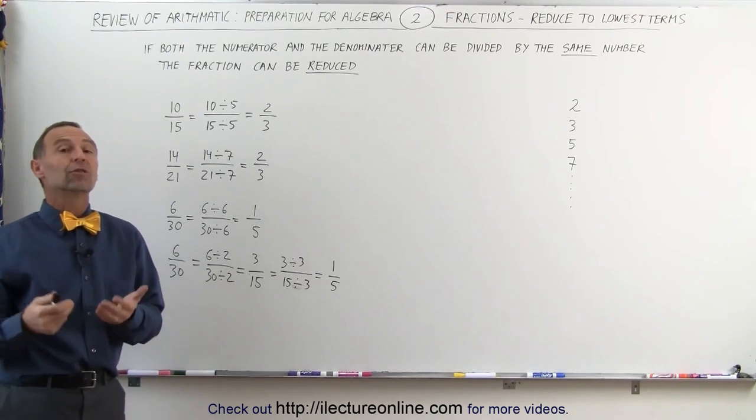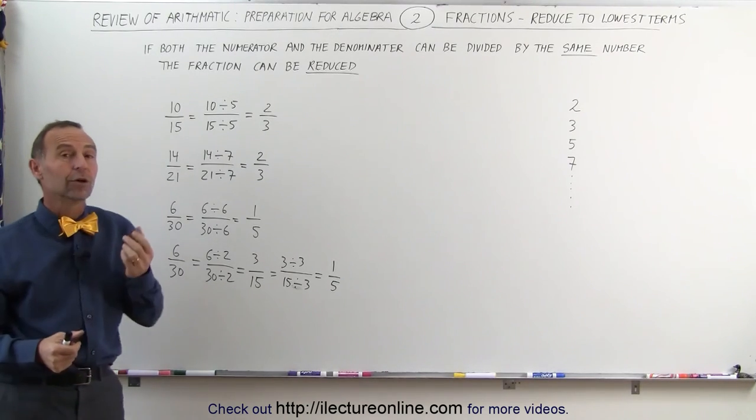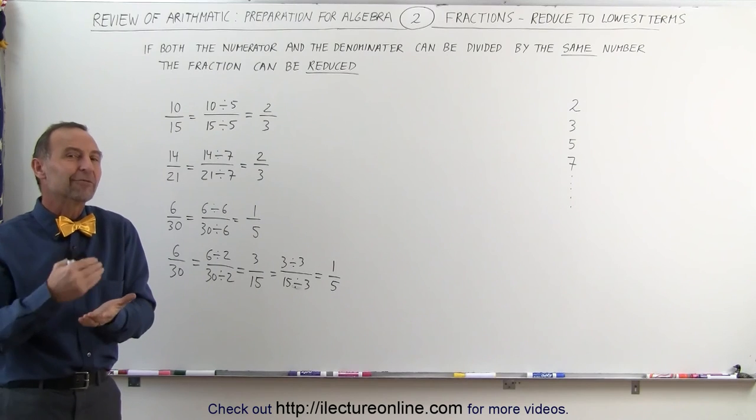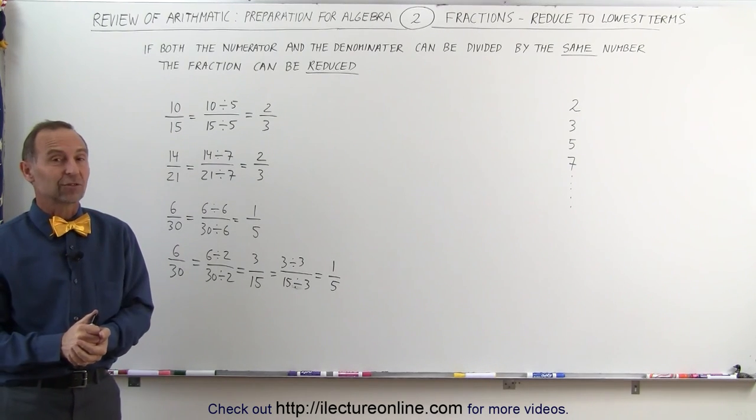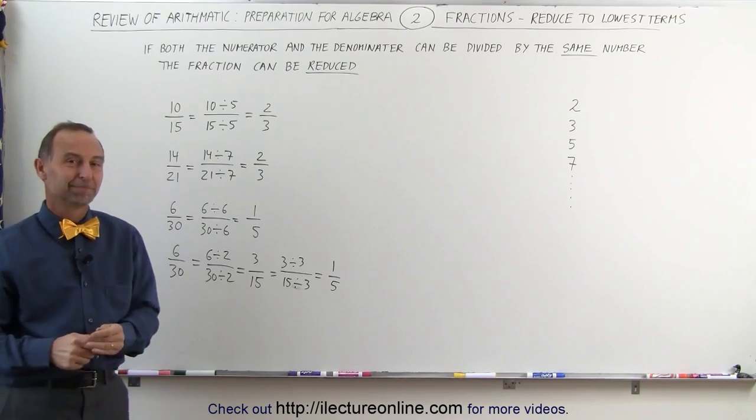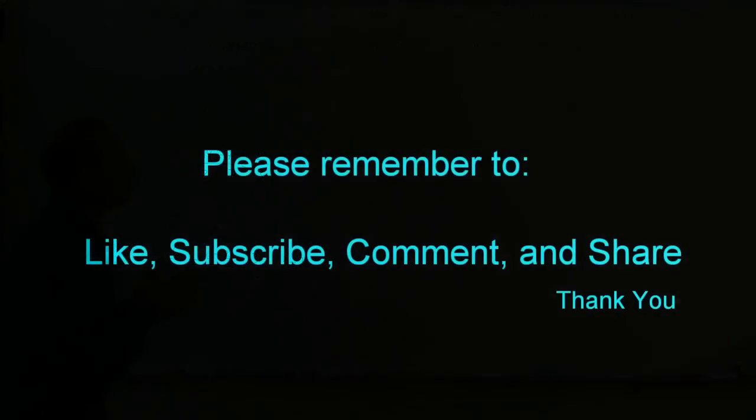That's what we mean by reducing a fraction to its simplest terms. We're looking for the numerator and the denominator, and look for what number can they both be divided by at the same time. And that's how we reduce these fractions. That's how it's done. Thank you very much.